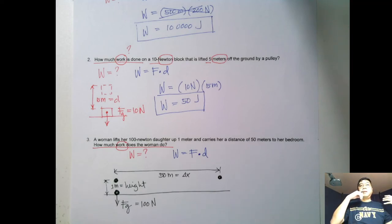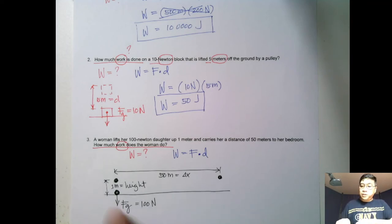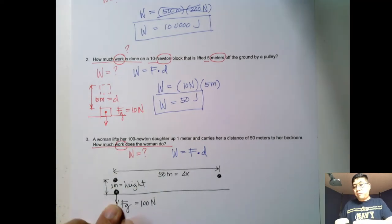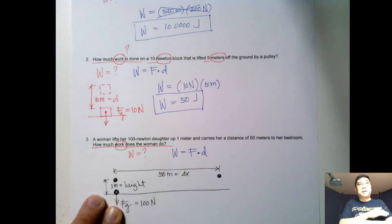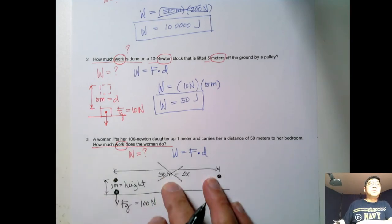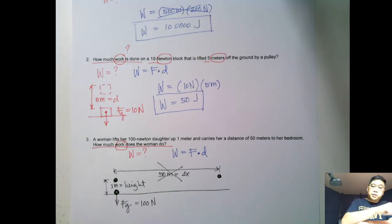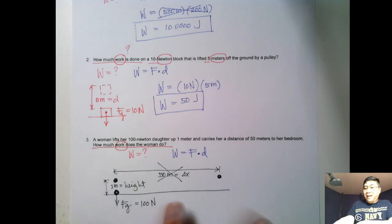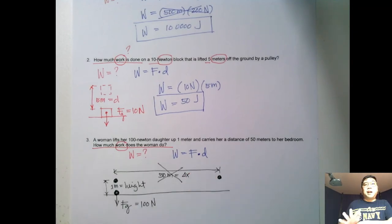Work is the product of force and distance only when they are along the same axis or in the same direction. The force of gravity acts downward, and the one-meter height is along the same vertical axis, so that counts. However, the force of gravity and the 50-meter horizontal displacement are perpendicular — not parallel — so that horizontal distance does not contribute to the work calculation.